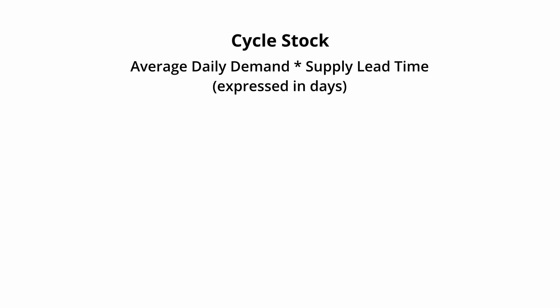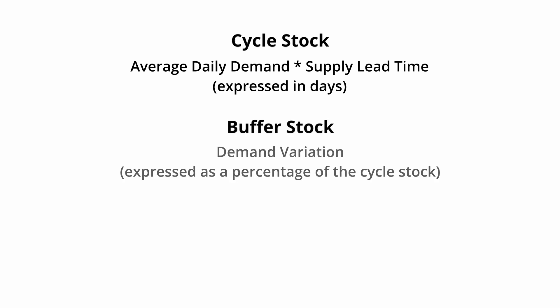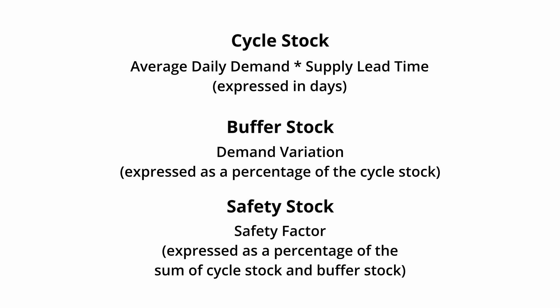Now let's move on to the calculation formulas. Cycle stock equals average daily demand multiplied by supply lead time, expressed in days. Buffer stock equals demand variation, expressed as a percentage of the cycle stock. Safety stock equals safety factor, expressed as a percentage of the sum of cycle stock and buffer stock.